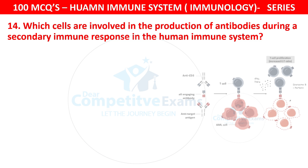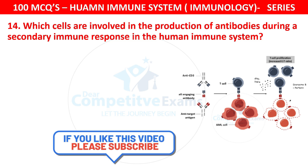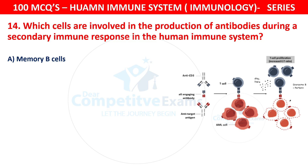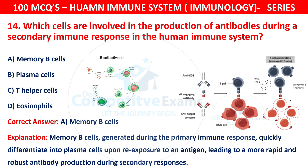Question 14. Which cells are involved in the production of antibodies during the secondary immune response in the human immune system? Your options are memory B cells, plasma cells, T helper cells, or eosinophils. The correct answer is A — memory B cells. Memory B cells generated during the primary immune response quickly differentiate into plasma cells upon re-exposure to an antigen, leading to more rapid and robust antibody production during secondary responses.